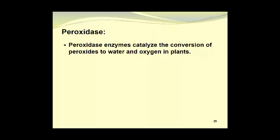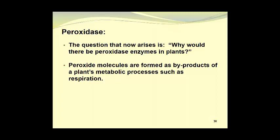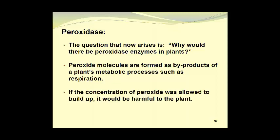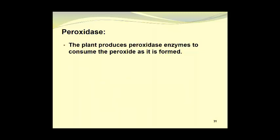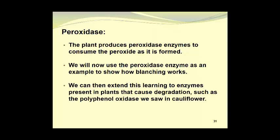Peroxidase enzymes catalyze the conversion of peroxides to water and oxygen in plants. We have hydrogen peroxide in the presence of peroxidase giving us water and oxygen which is liberated as a gas. And once again we need to balance this chemical reaction. The question that now arises is why would there be peroxidase enzyme present in plants? Peroxide molecules are formed as byproducts of a plant's metabolic processes such as respiration. If the concentration of peroxide was allowed to build up, it would be harmful to the plant. So the plant produces peroxidase enzymes to consume the peroxide as it is formed. We will now use the peroxidase enzyme as an example to show how blanching works. We can then extend this learning to enzymes present in plants that cause degradation such as polyphenol oxidase that we saw in the cauliflower.